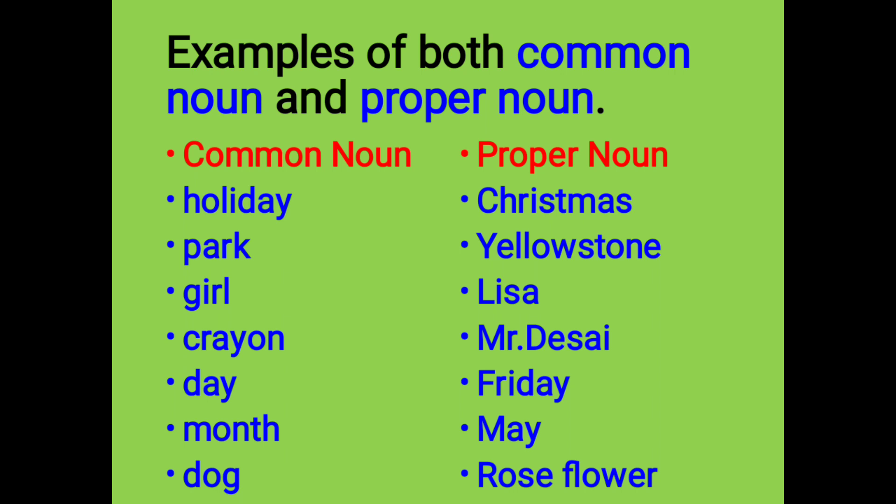Now let's learn examples of both common noun and proper noun. First, we will see the examples of common noun. As I told you, common noun does not begin with capital letters — it is always written in small letters. Examples: holiday, park, girl, crayon, day, month, dog. These all are the examples of common noun.